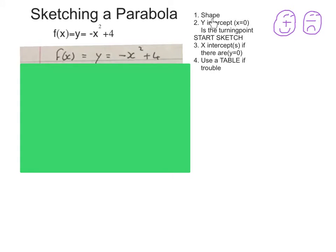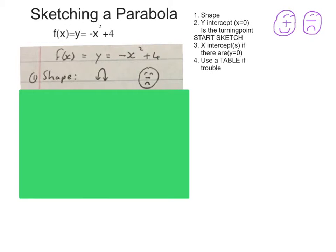It says here the shape. We do the shape first. There is a minus in front of the x square. That means we will have a sad face parabola. The second thing we work out is we set the y-intercept and we make x naught. We go into this equation, make x naught.